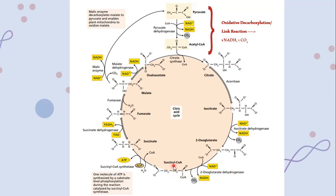Alpha-ketoglutarate (2-oxoglutarate) again undergoes decarboxylation, with the removal of one carbon dioxide molecule and formation of one NADH molecule, causing the formation of succinyl coenzyme A. This reaction is catalyzed by the enzyme 2-oxoglutarate dehydrogenase (also called alpha-ketoglutarate dehydrogenase). The five-carbon alpha-ketoglutarate is converted into four-carbon succinyl coenzyme A by the addition of coenzyme A.